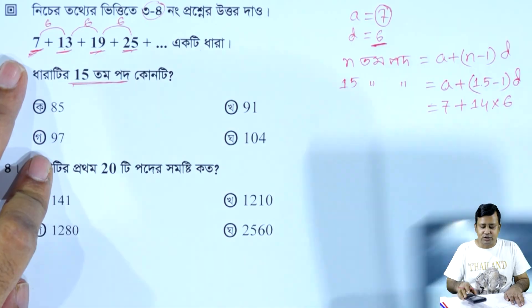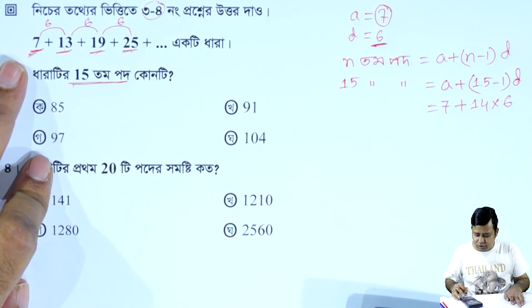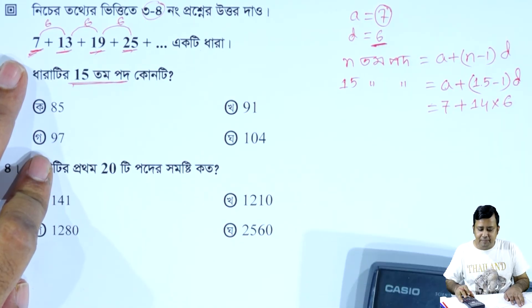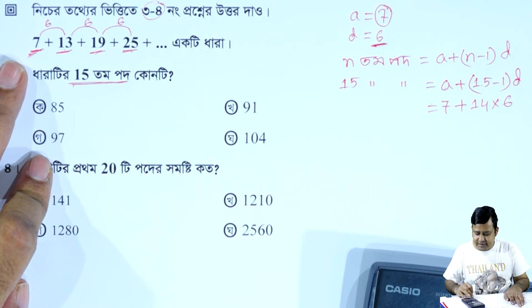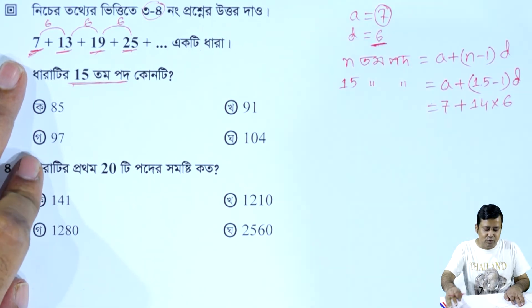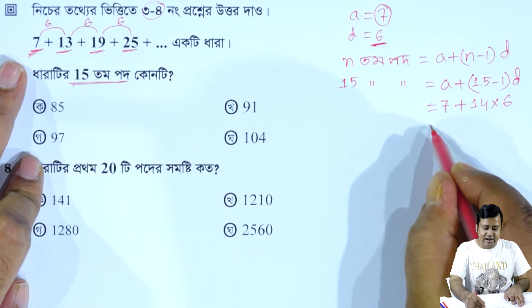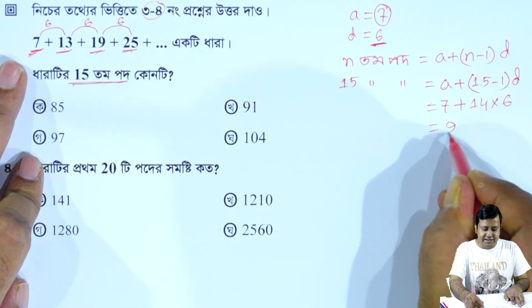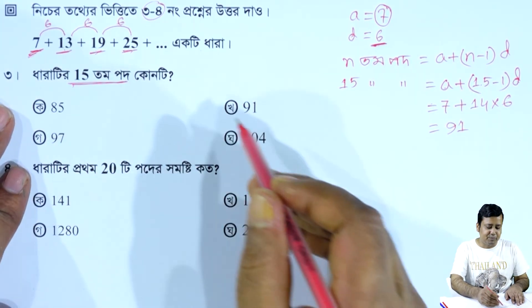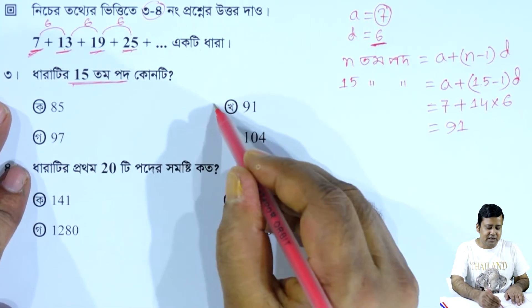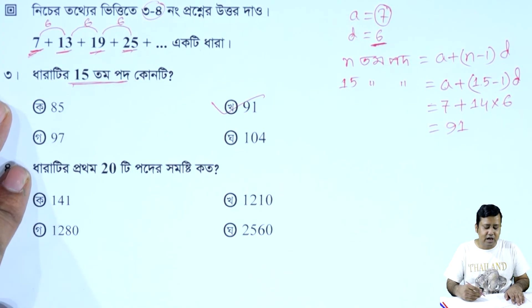Now we calculate. The 15th term is: 15 into 6 plus 7. The first term is 7. So the calculation gives us the 15th term of the arithmetic progression.